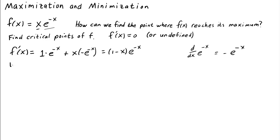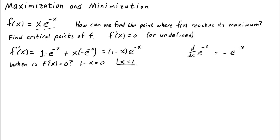So when is f prime of x equal to 0? e to the negative x can never be 0, so the only possibility is that 1 minus x equals 0 — in other words, when x equals 1. So x equals 1 is a critical point.